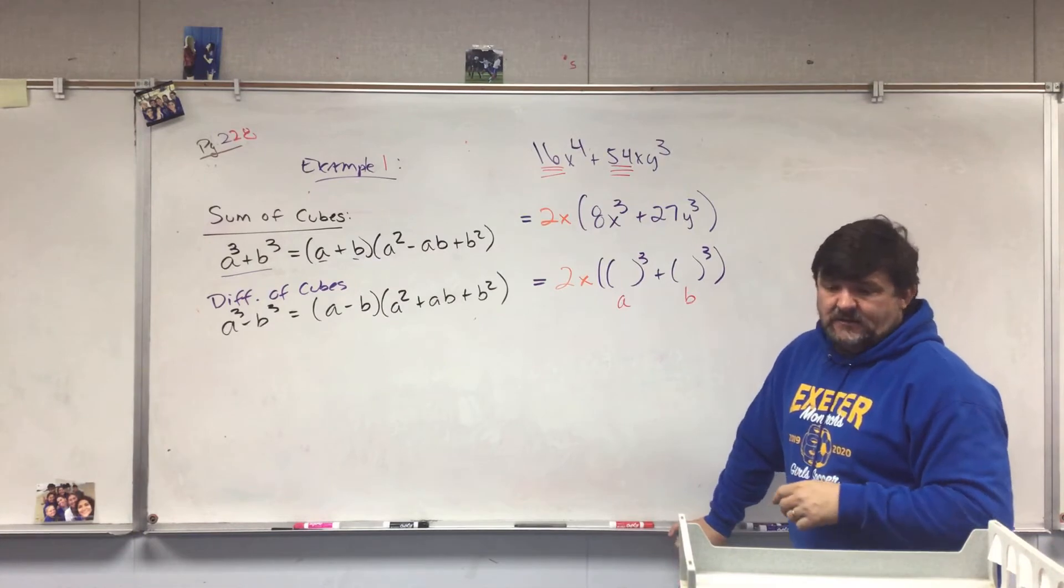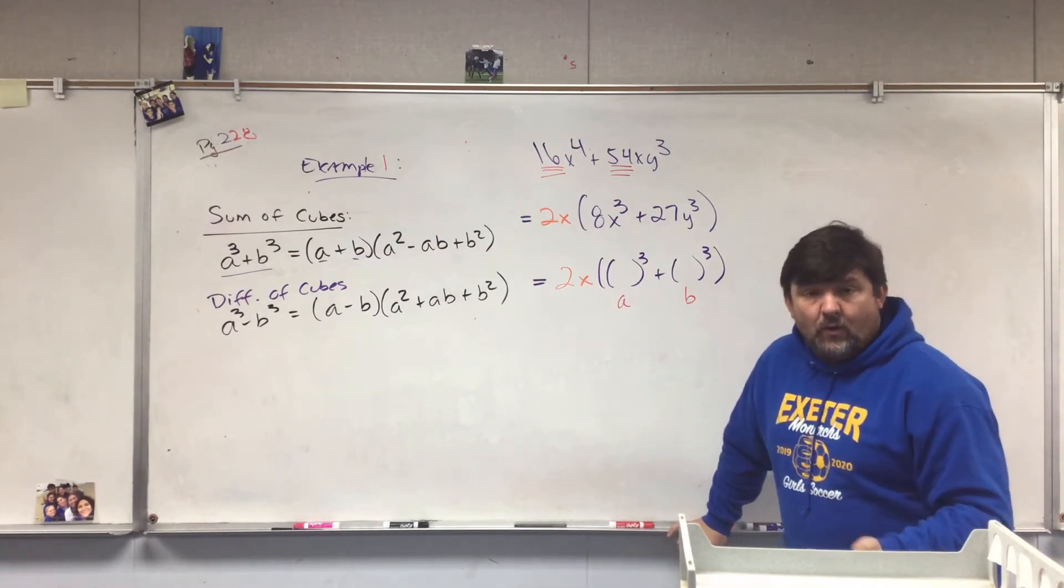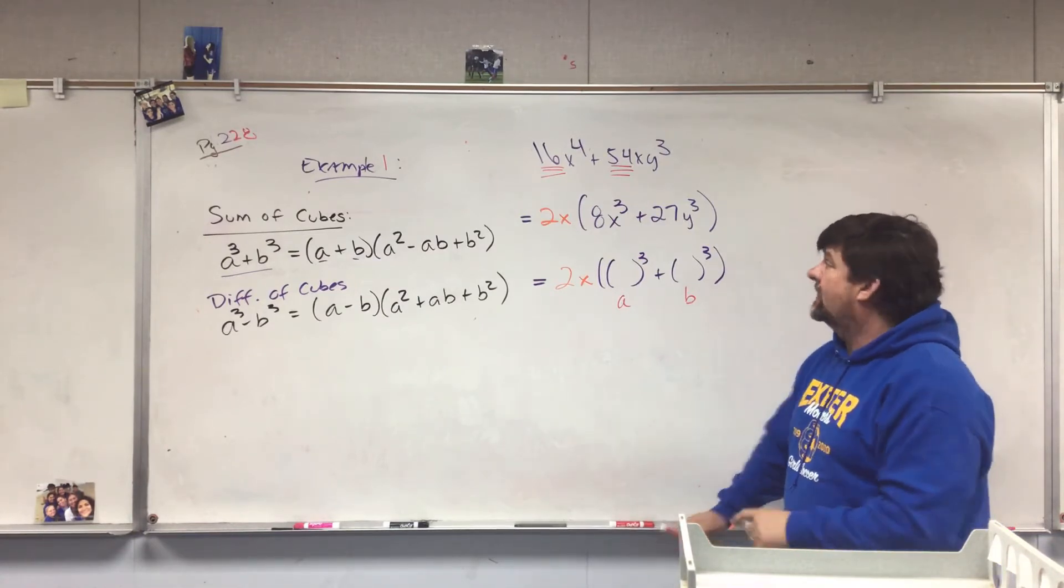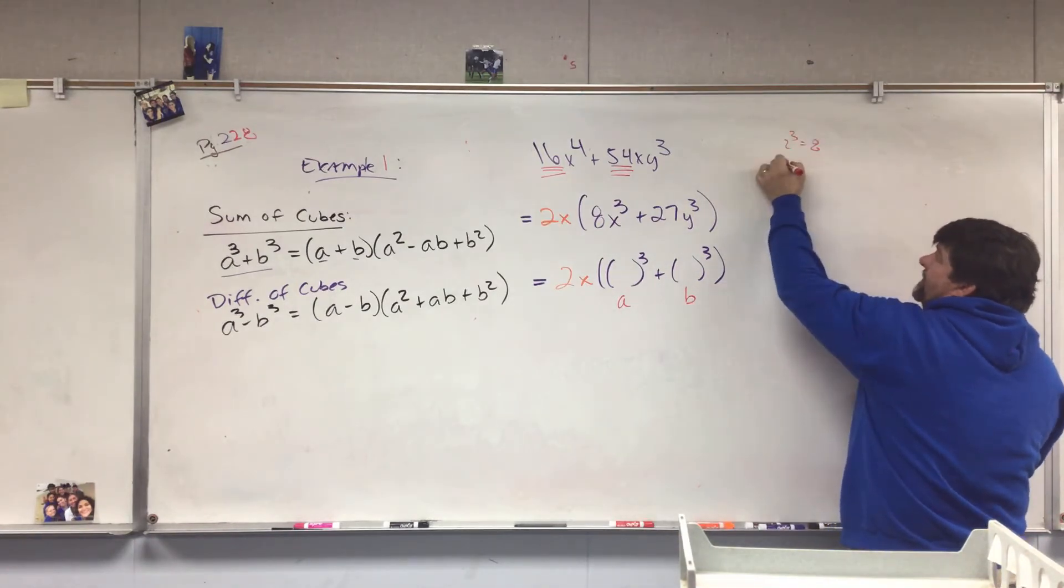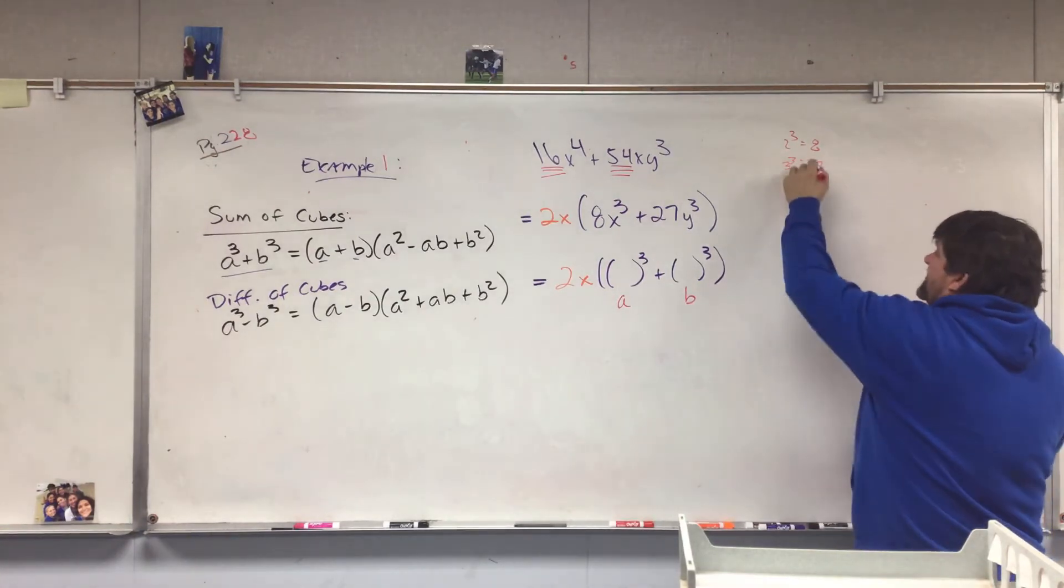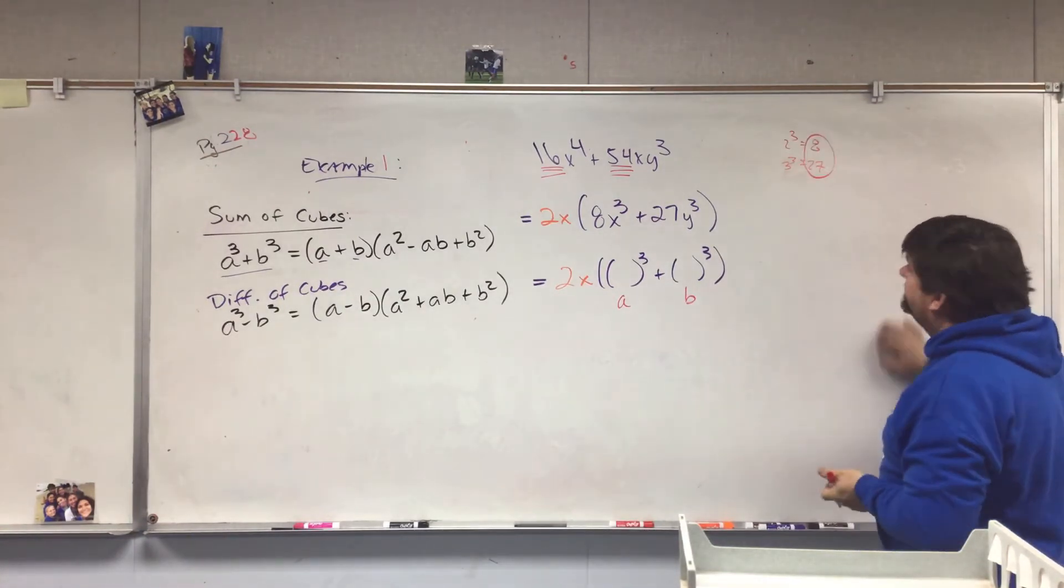Like they have to be 8, 27, 64, they got to be perfect cubes. So in other words, it's got to be perfect like 2³ = 8, 3³ = 27. So they've got to be these types of numbers or you can't do it.